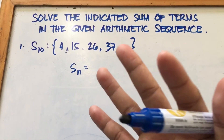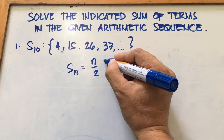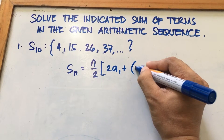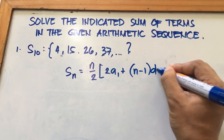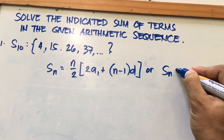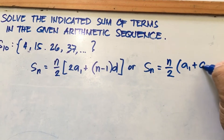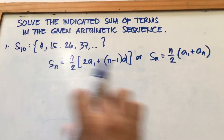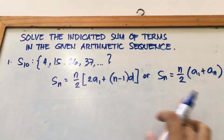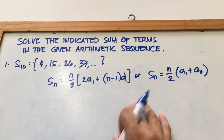It depends on which formula you're comfortable with. One is S sub n equals N over 2, bracket, 2 times A sub 1 plus, open parenthesis, N minus 1, then times D, close bracket. The other formula is S sub n equals N over 2, parenthesis, A sub 1 plus A sub n. These are the two formulas, but we simply arrive at the same answer using either one. I will show you that if you use this formula or that formula, we will still arrive at the same answer.